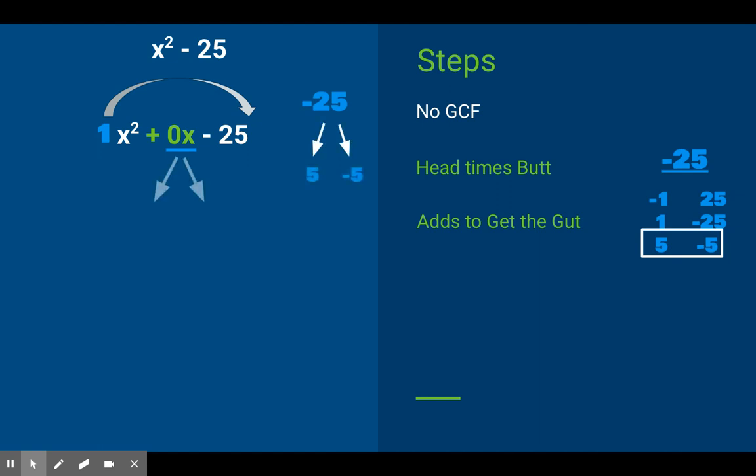So for negative 25, we're going to work with 5 and negative 5. If I take this 0x and I break it up into 5x minus 5x, or if you reversed it negative 5x plus 5x, that equals 0x. So far we have written three different functions, polynomials, that are equivalent.